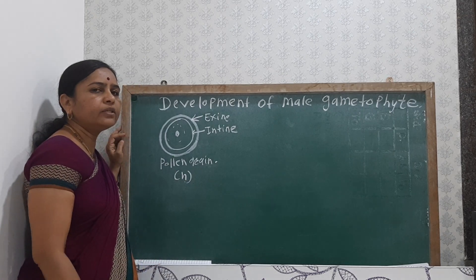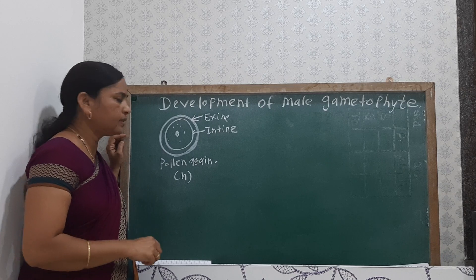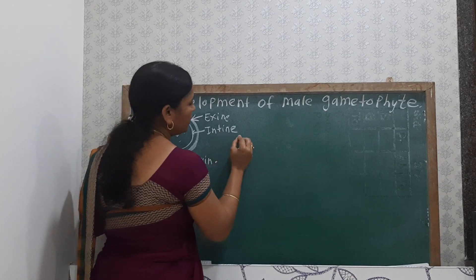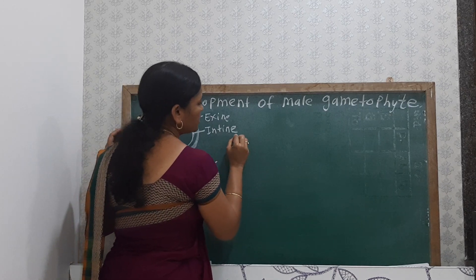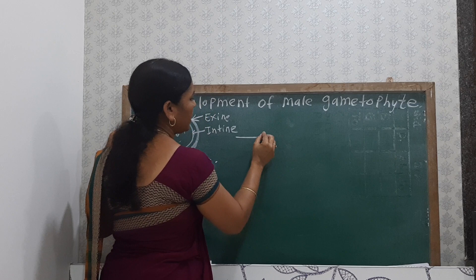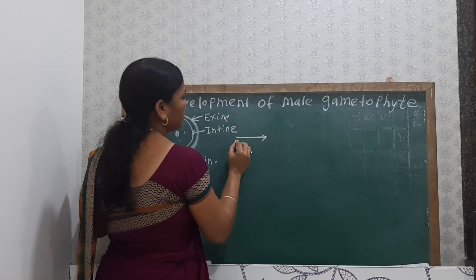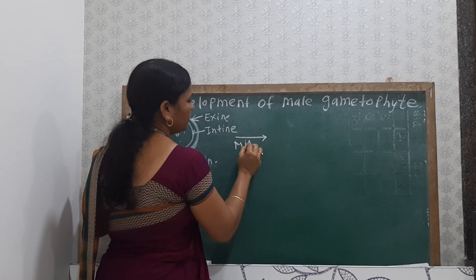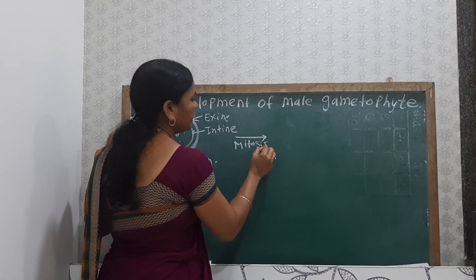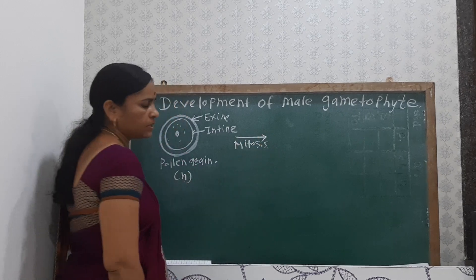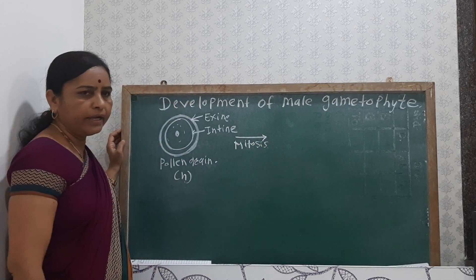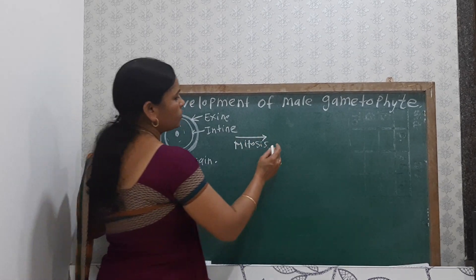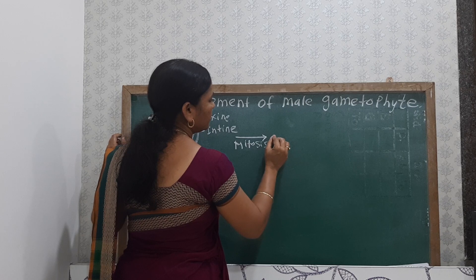When the pollen grain is inside the anther, it divides by mitosis. The first mitotic division takes place, and after the mitosis, it produces the two-celled structure.